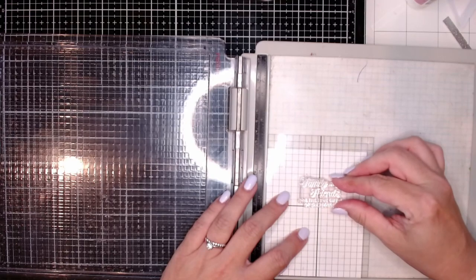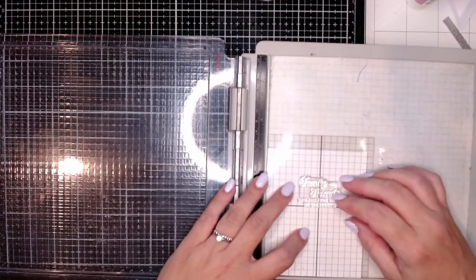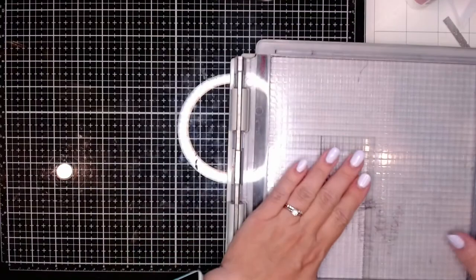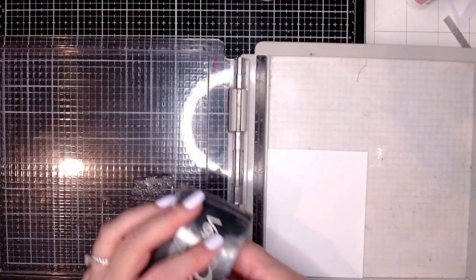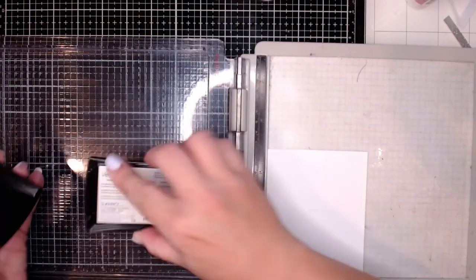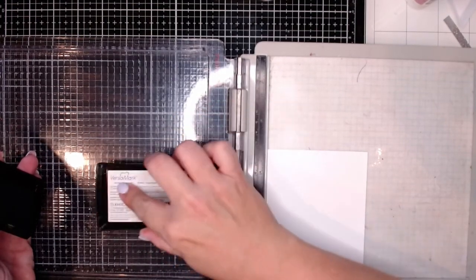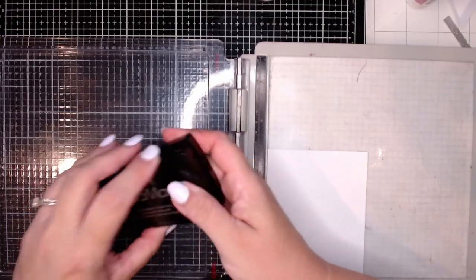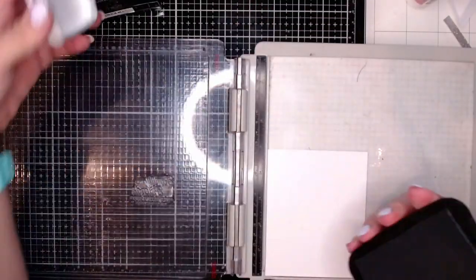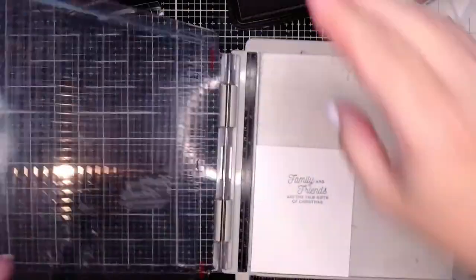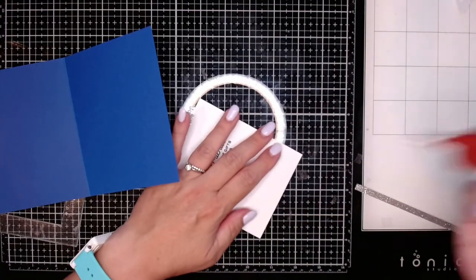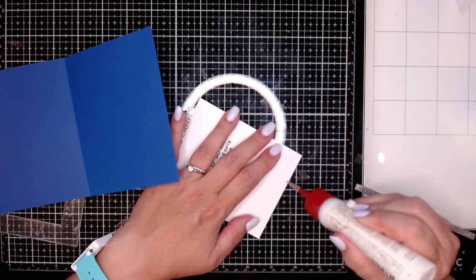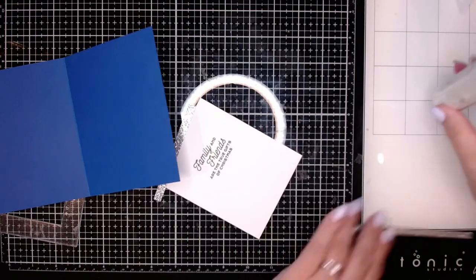I'm lining that up on an extra A2 size panel. And then I'm going to condition that stamp because it's brand new using my Versamark ink before stamping it back down in Memento Tuxedo Black.